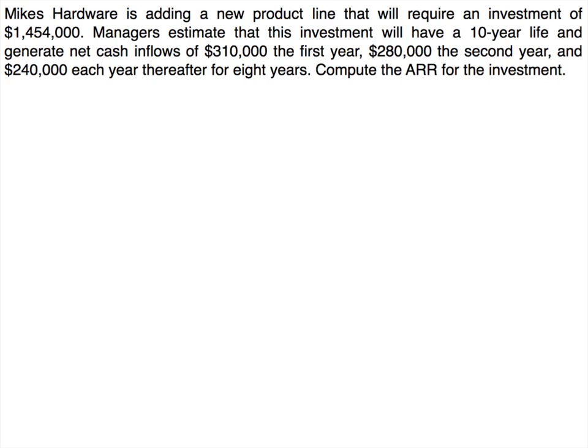Let's try one more example. Mike's Hardware is adding a new product line requiring an investment of $1,454,000. Managers estimate a 10-year life with net cash inflows of $310,000 in year one, $280,000 in year two, and $240,000 each year thereafter for eight years. We previously computed the payback period; now compute the ARR using the original method. Pause and select which form of the formula is needed.